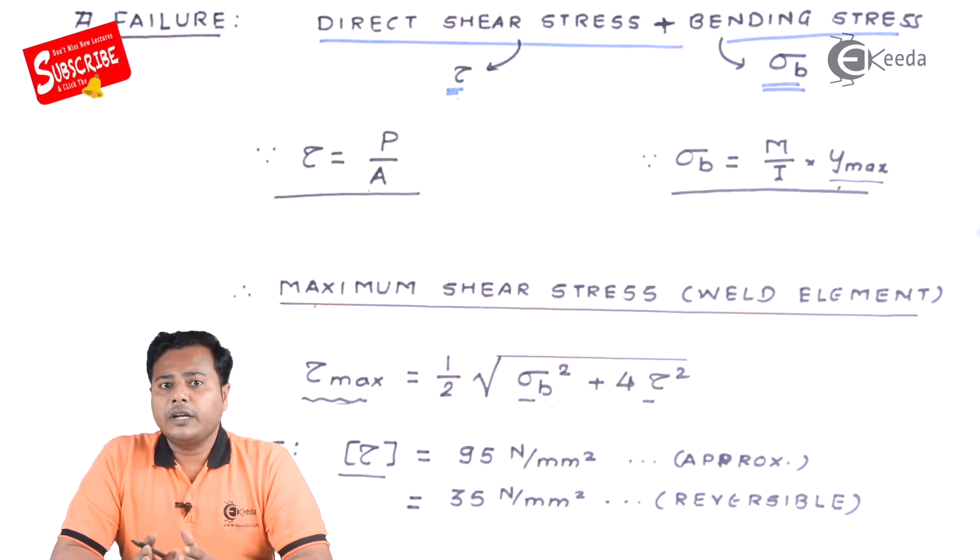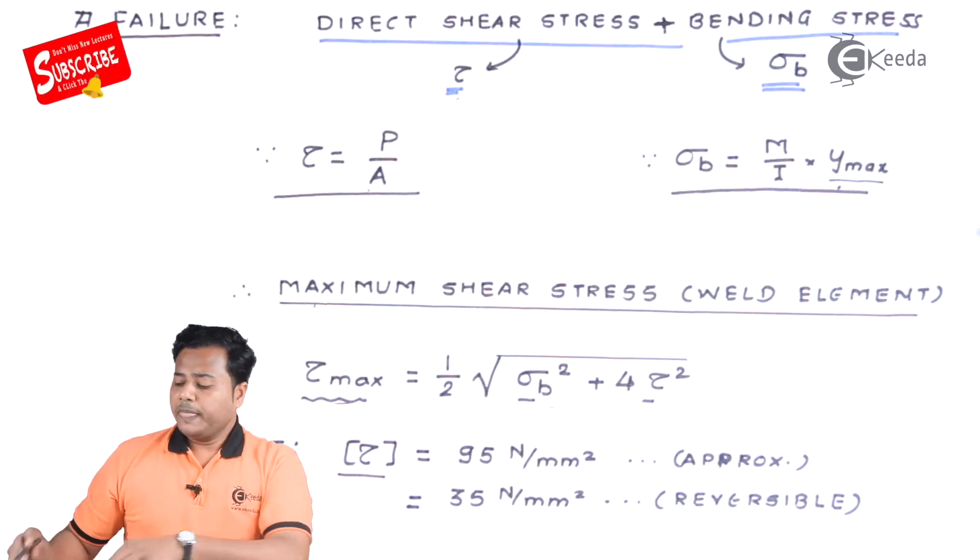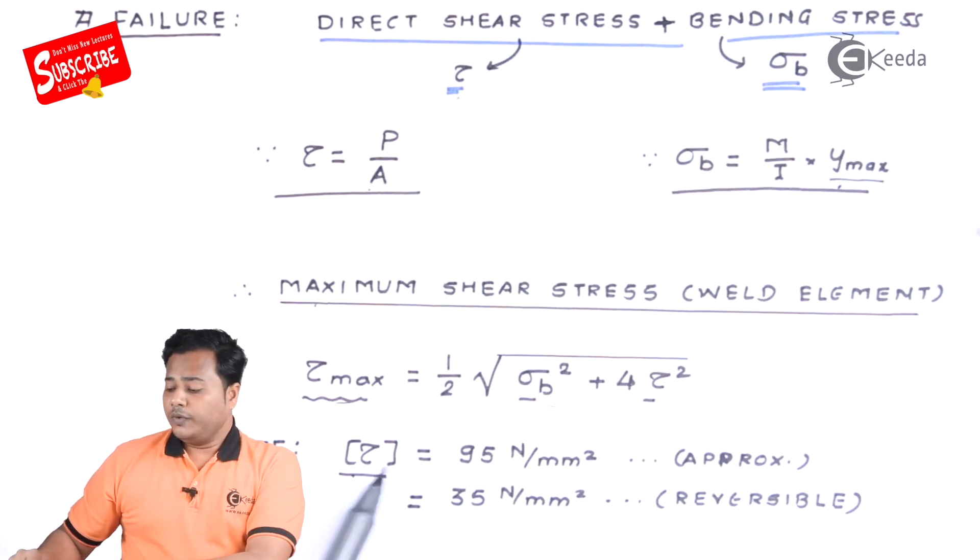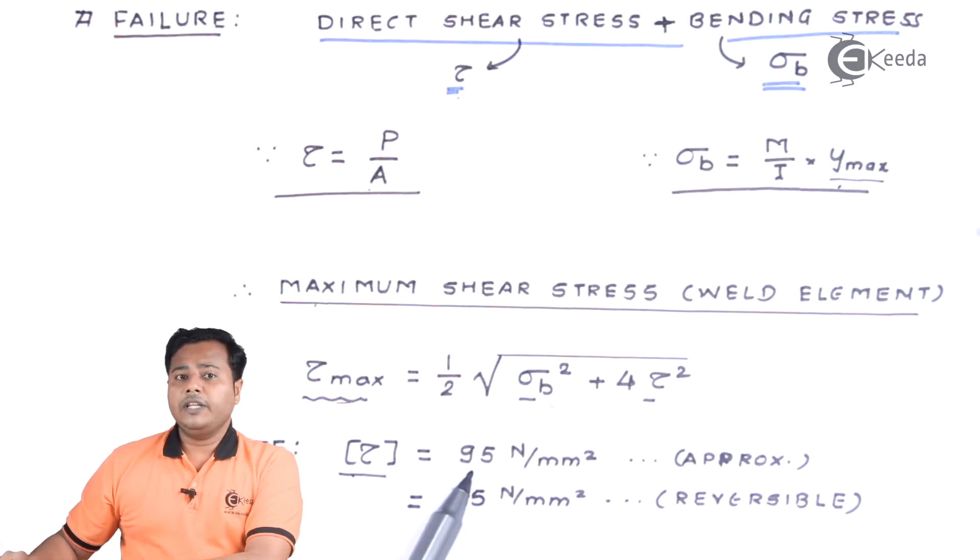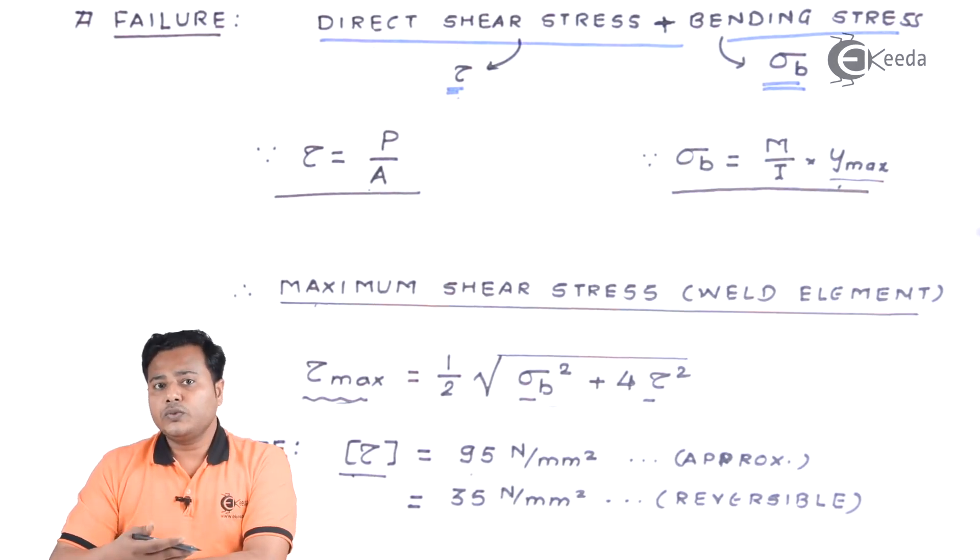But we are considering it superficial and that's why two things you need to remember. You can recollect those values like the allowable value of shear will be somewhere around 95 Newton per millimeter square for the material which is in general used for the welding.